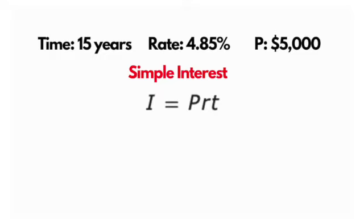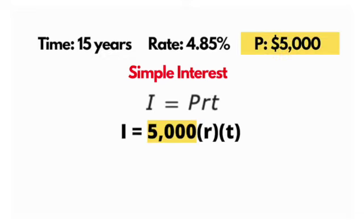Our simple interest formula is I = Prt, which is interest equals principle times rate times time. Let's plug in what we know. We're trying to find our interest, so we have $5,000 which we can substitute in for our principle.